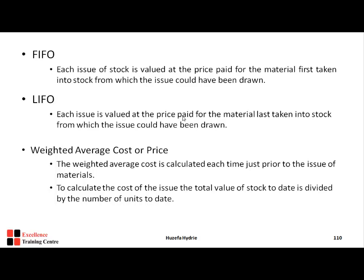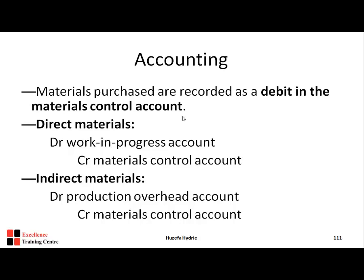That covers the inventory valuation methods — FIFO, LIFO, and Weighted Average — which are the main focus of material cost. For the accounting double entries: material purchases are debited to the material control account and credited to cash or payables. When direct material is issued to production, we debit Work in Progress and credit Raw Material. For indirect material, since it is part of overheads, we debit Production Overheads and credit Raw Material.